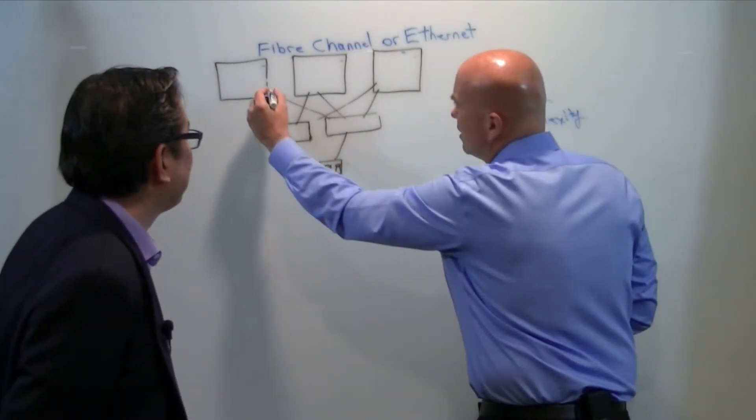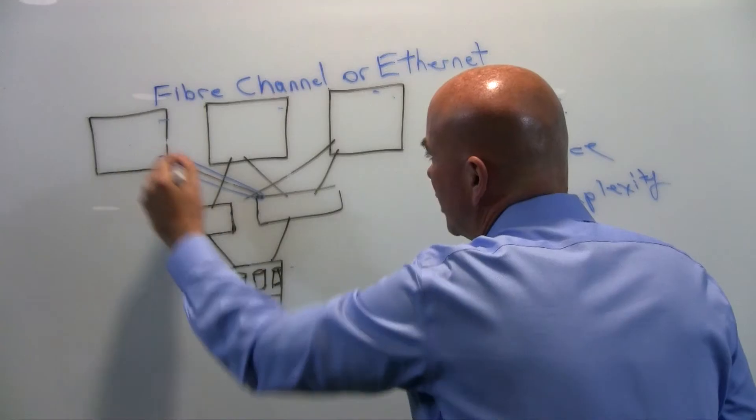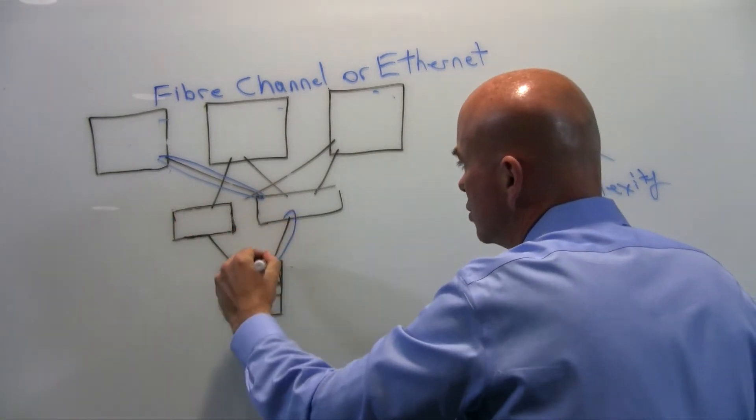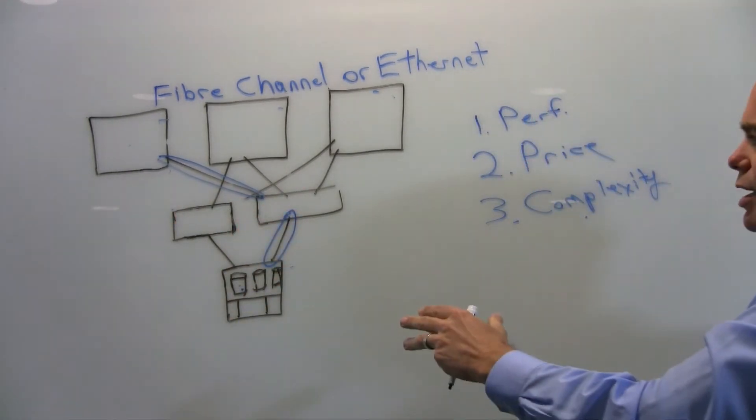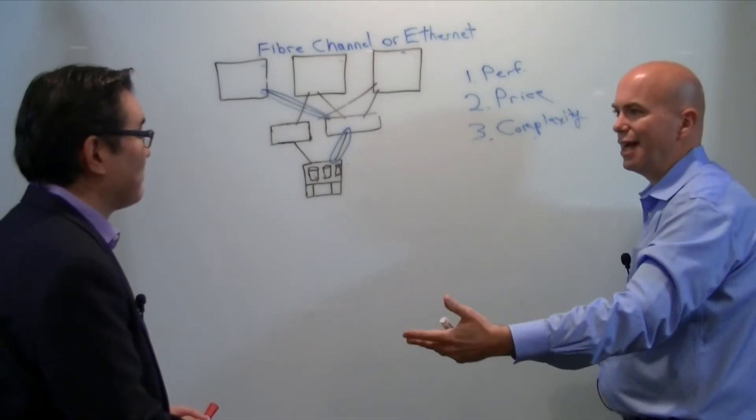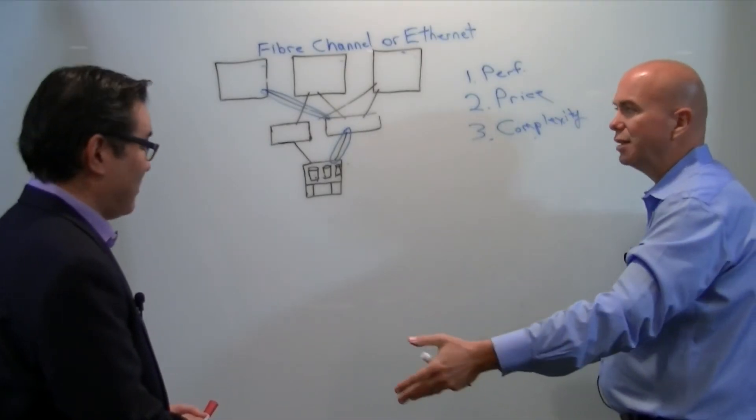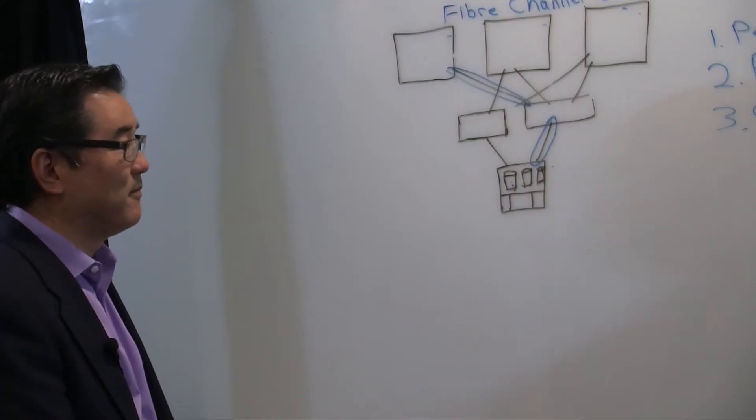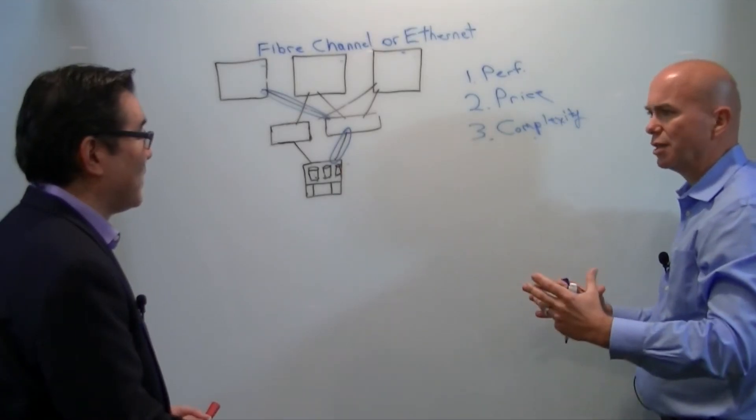So what we're talking about here is my connection from the server and potentially from the switch to the storage, that is now running 16 gig commonly available, FCIA announcing 32 gig. So that's the speed of those connections, right? Now, where does the 128 connection come in?